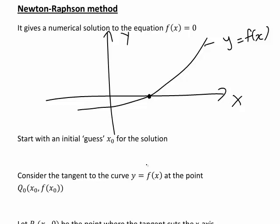Let's have a look at how this method actually works. First we start with an initial guess x0 for the solution. The actual solution is the y intercept of this graph because it is where y equals f of x cuts the x axis. Let's suppose our initial guess x0 ended up being here.